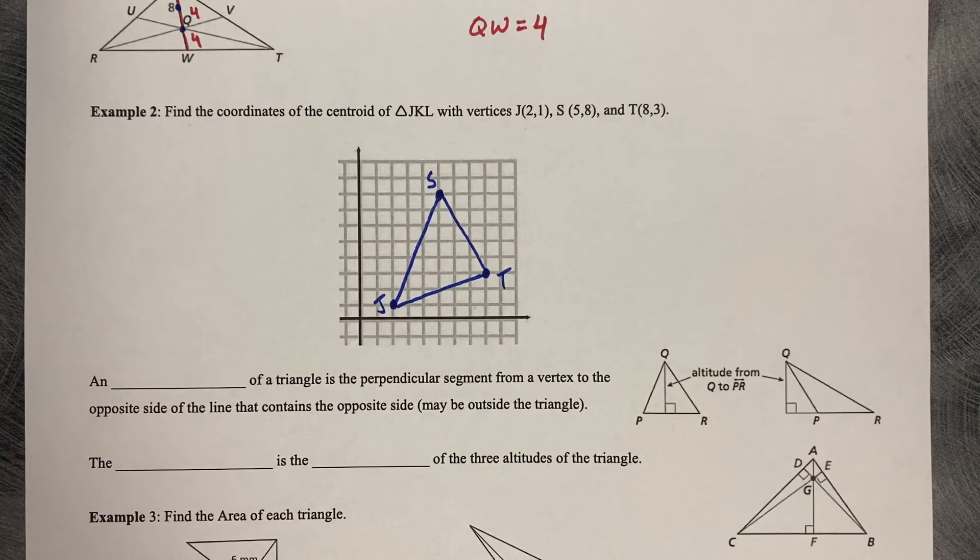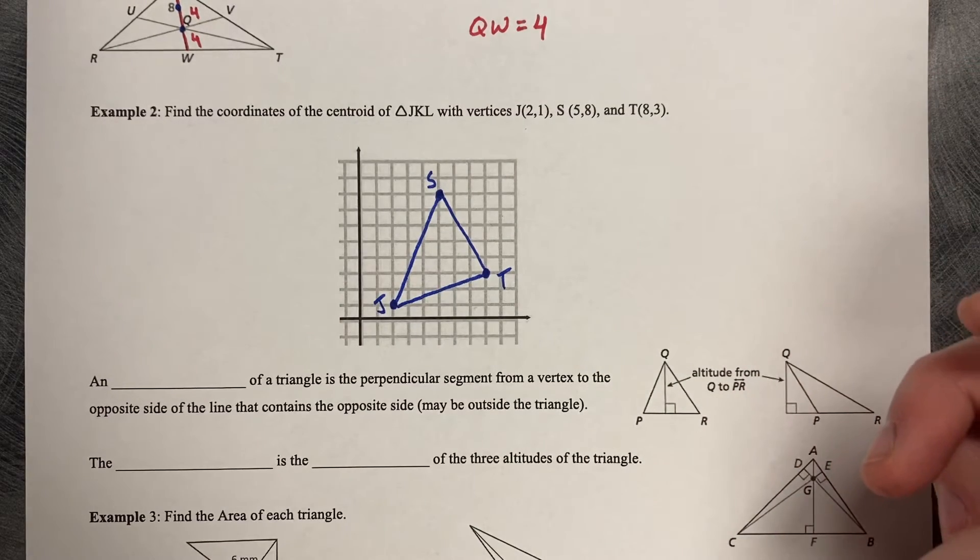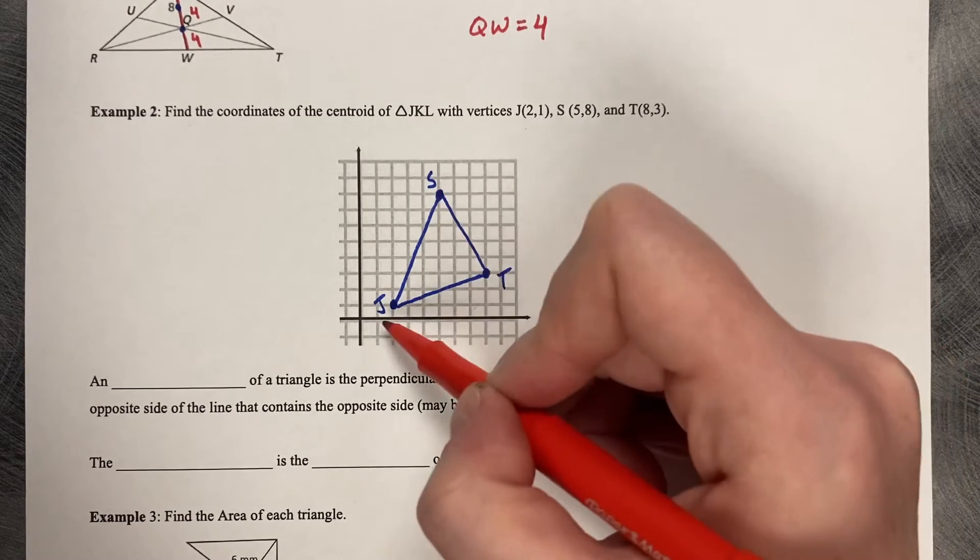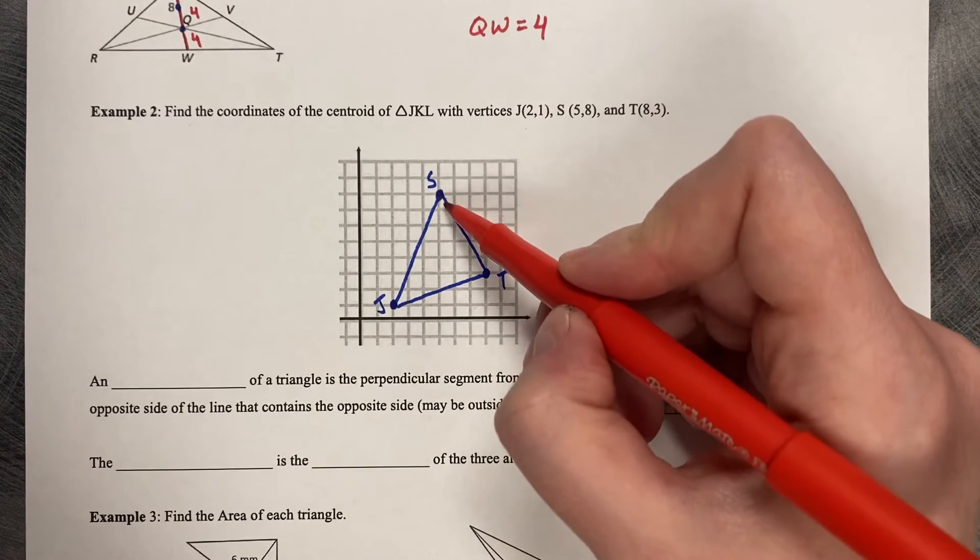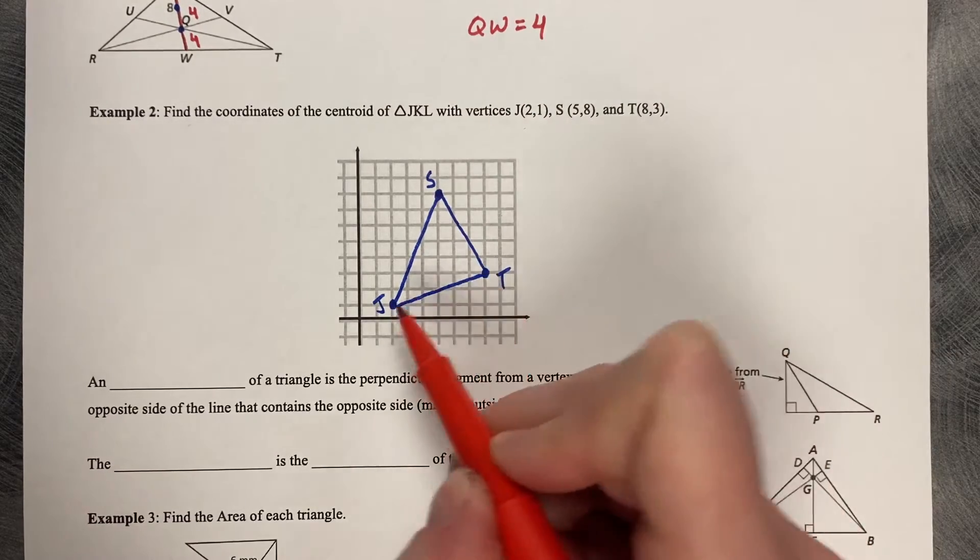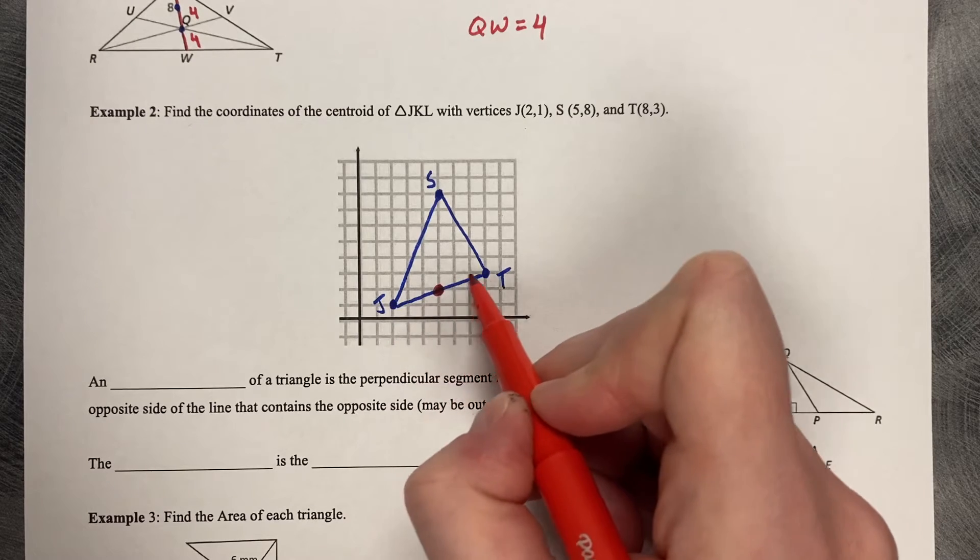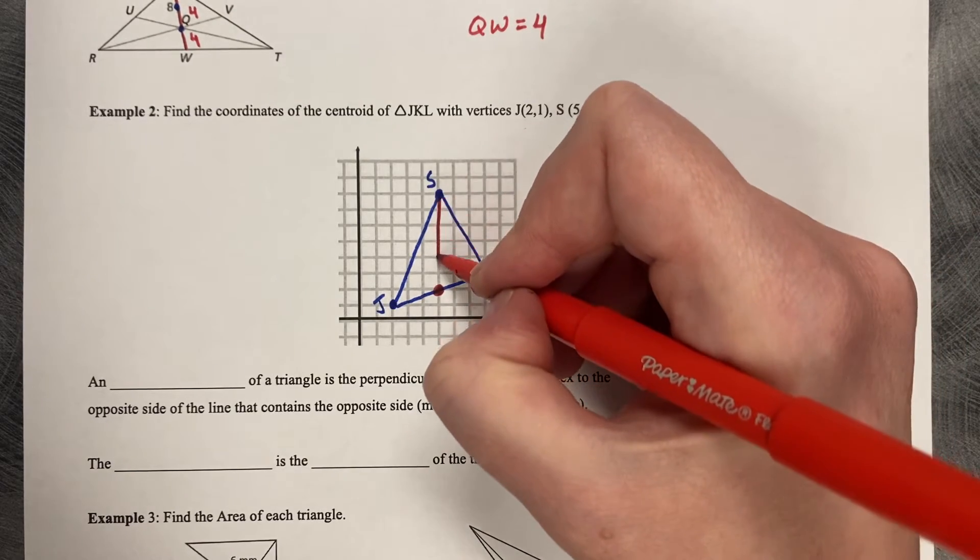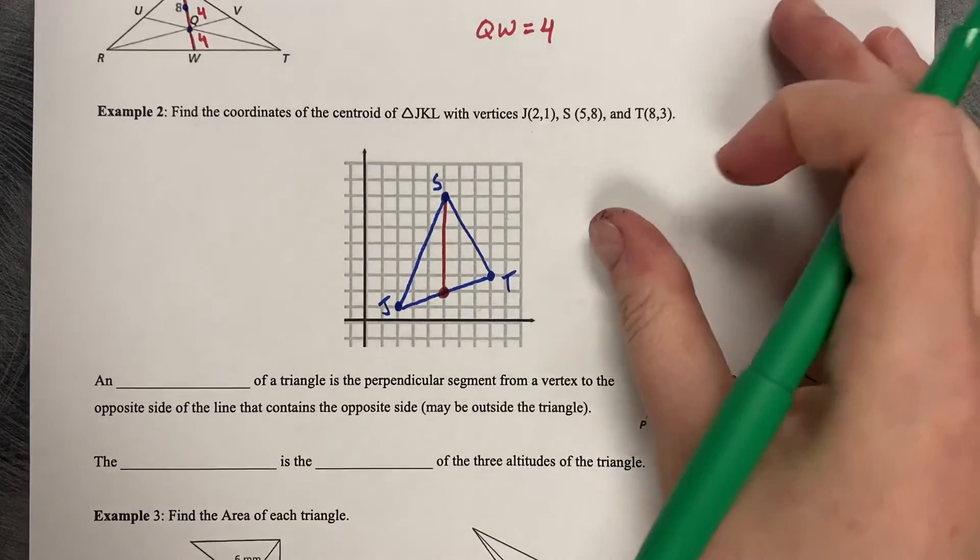So you only need one median in order to get the centroid of your triangle. You don't need all three because once you have one median, you can use that median to help you get the two-thirds length. So when you look at each side, what you're trying to figure out is which side length has the easiest midpoint to see. So on this side, oh man, that one's kind of tough, cuts through a lot of boxes. This one also cuts through a lot of boxes. But if you look at the side JT, you can see that JT runs right through a midpoint right there, up 1 over 3, up 1 over 3, and it's got a really nice midpoint on that side. So if that's the case, then the median that you would draw in is from S to that midpoint straight down.